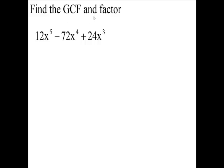Find the greatest common factor and then factor this expression. So we have 12x to the 5th minus 72x to the 4th plus 24x cubed.